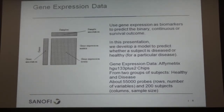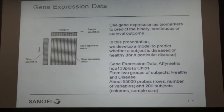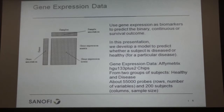The gene expression data is from Affymetrix HGU 133 plus two chips — a standard chip to acquire gene expression data for humans. We have two groups of subjects: healthy people and diseased people. There are about 50,000 probes, which is roughly 50,000 variables or genes on this chip, and we have a total of about 200 subjects.